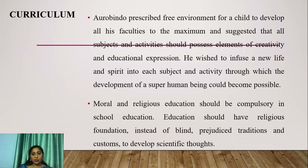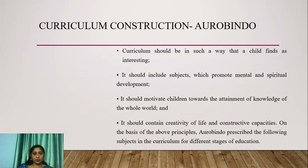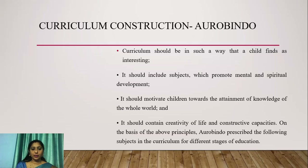Moral and religious education should be compulsory in school education. Education should have religious foundations instead of blind, prejudiced traditions and customs, in order to develop scientific thought. Curriculum construction according to Aurobindo: curriculum should be such that a child finds it interesting. It should include subjects which promote mental and spiritual development, motivate children towards the attainment of knowledge of the whole world, and contain creativity of life and constructive capacities.